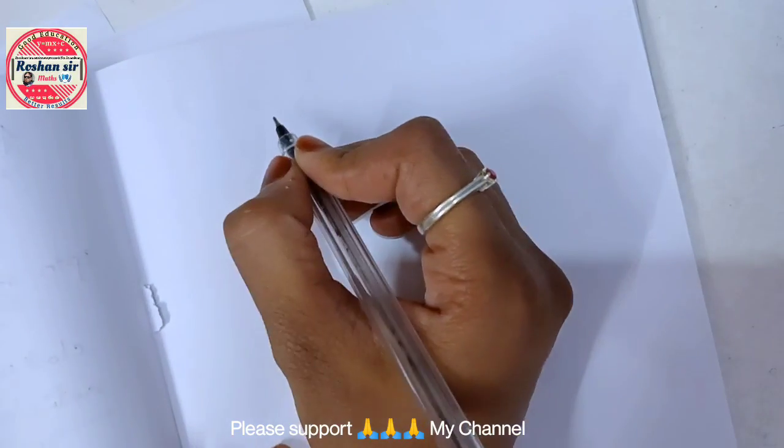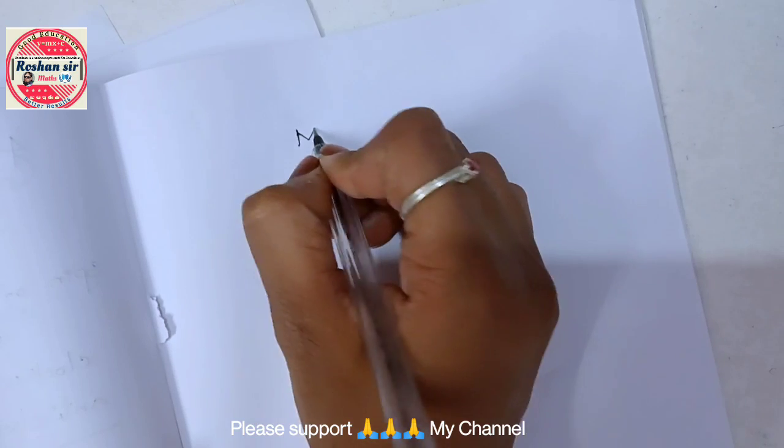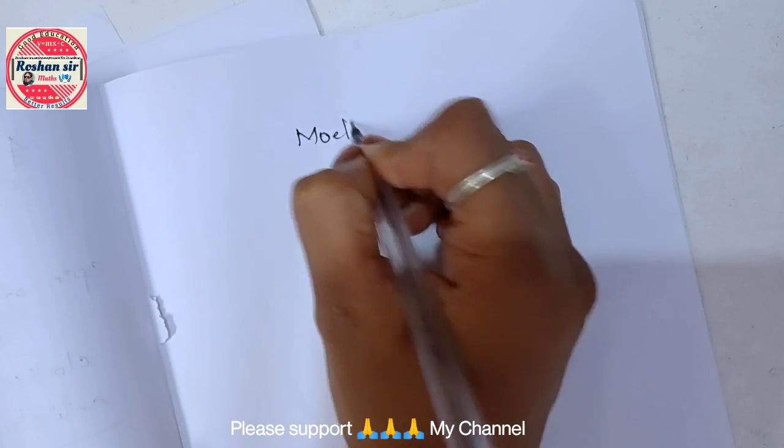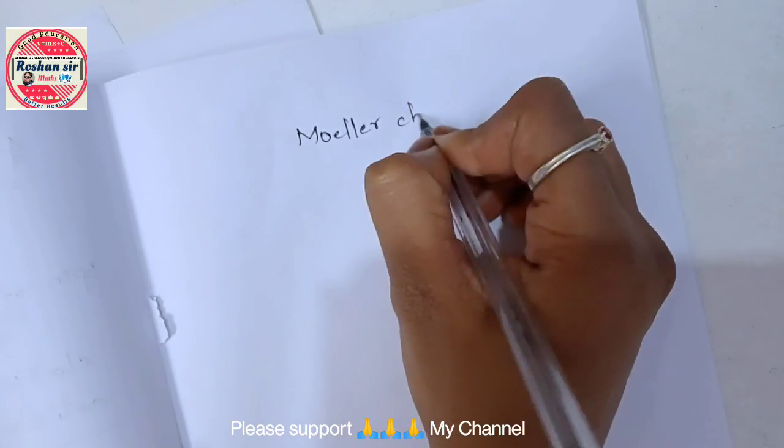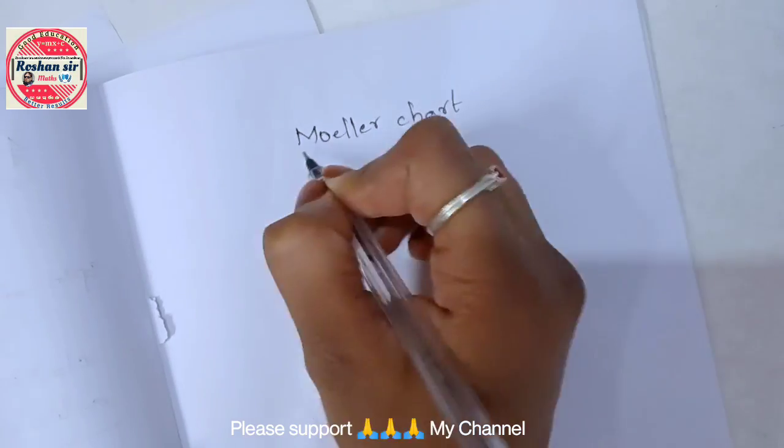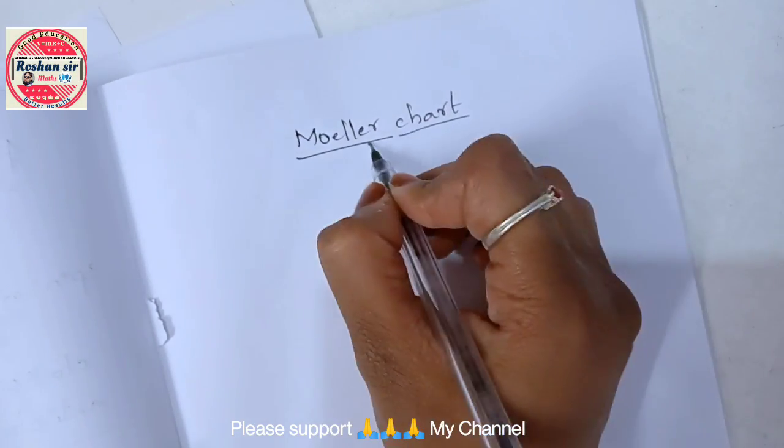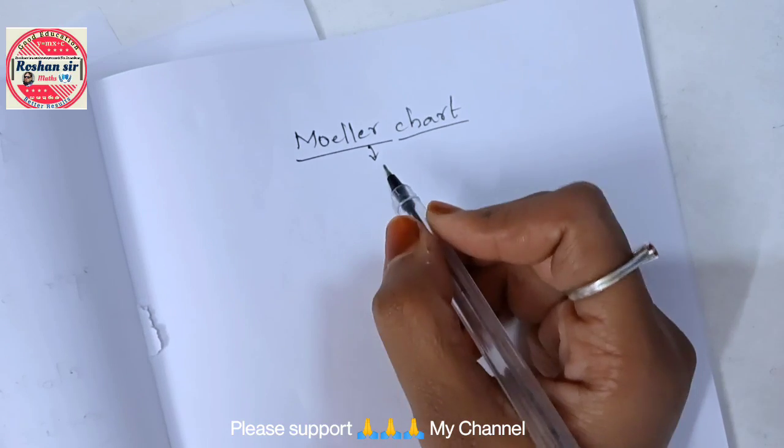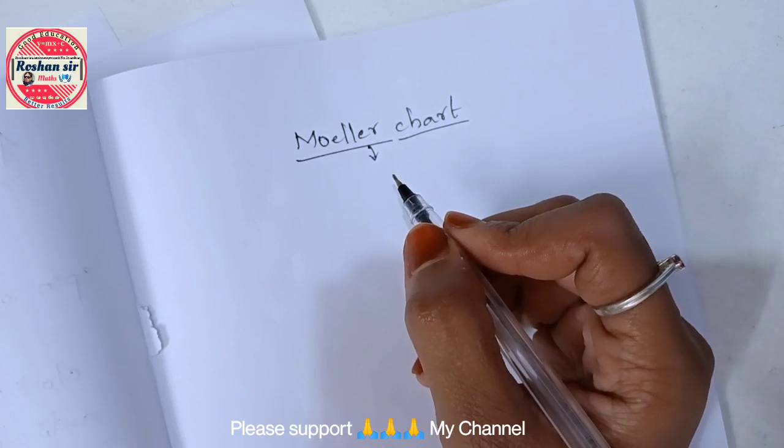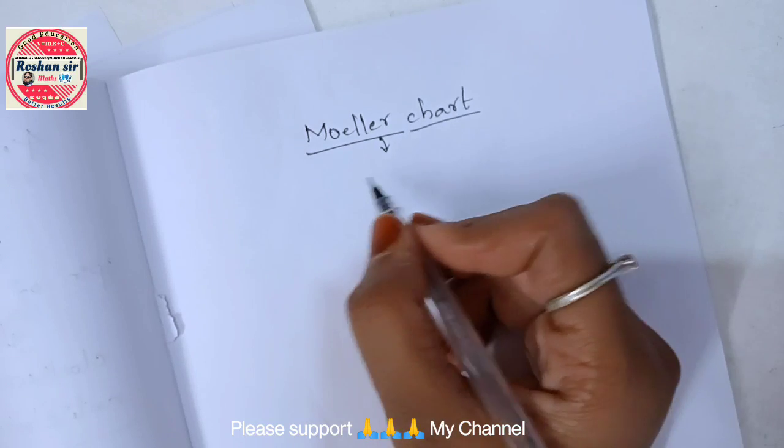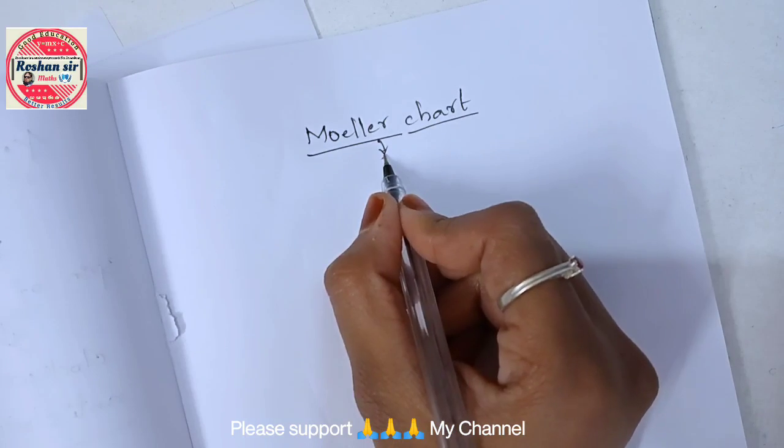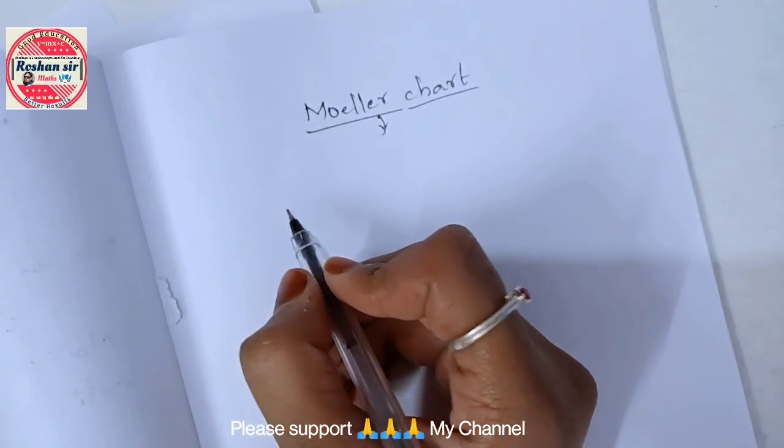A very good evening to everyone. Now we will study about Moller's chart, which is a chemistry topic in atomic structure. We will study the filling order of atomic orbitals. I will tell you how easily and simply you can remember with the simplest tips and tricks.